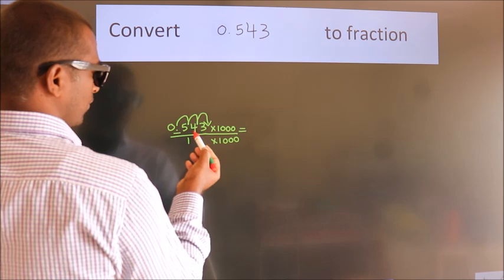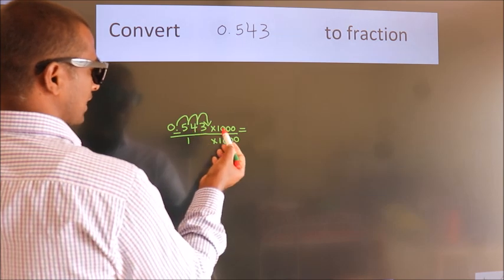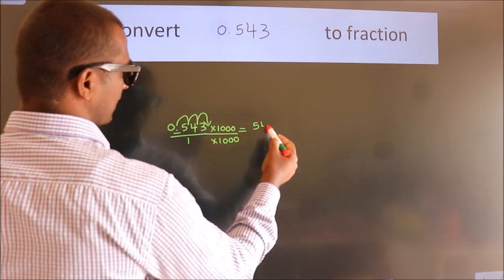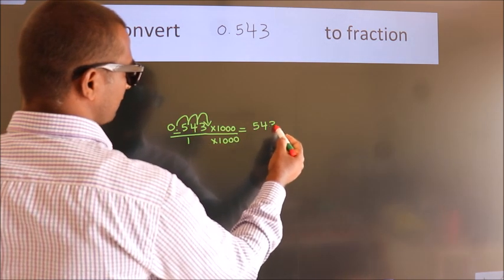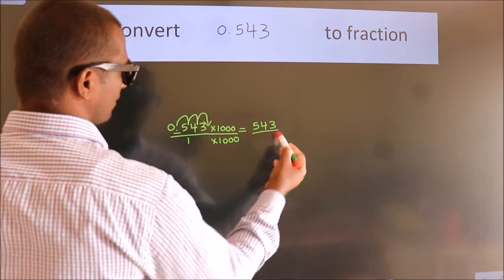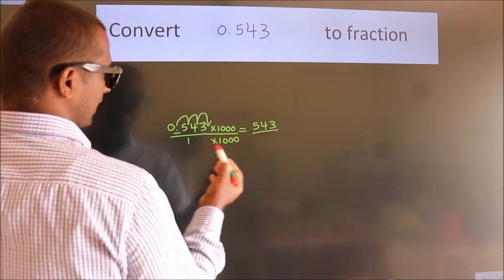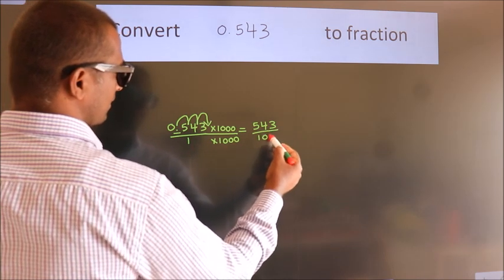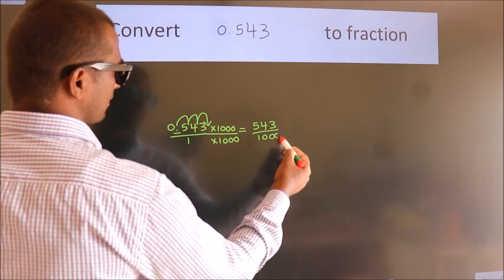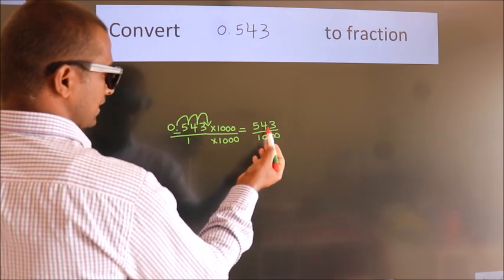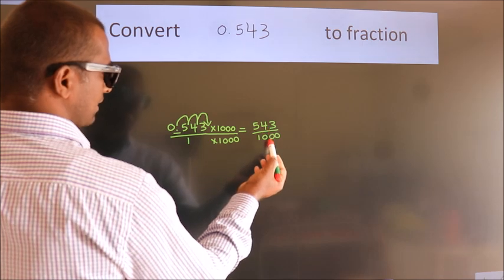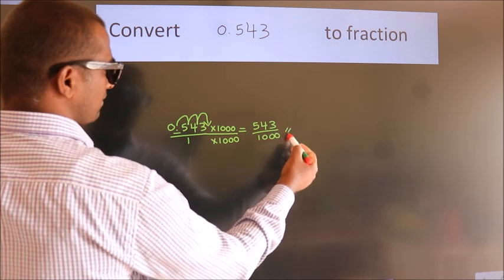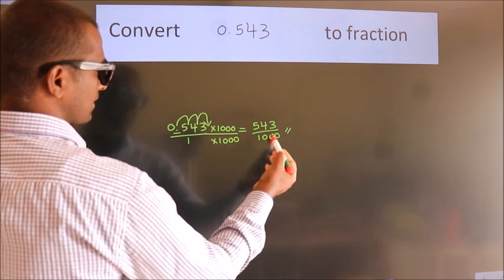0.543 into 1000 equals 543. 1 into 1000 equals 1000. This cannot be simplified any further. So this is our fraction: 543/1000.